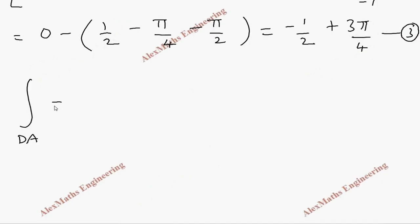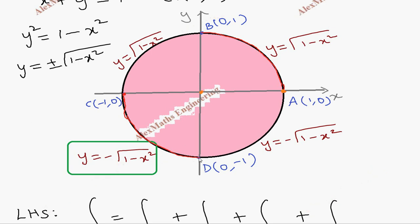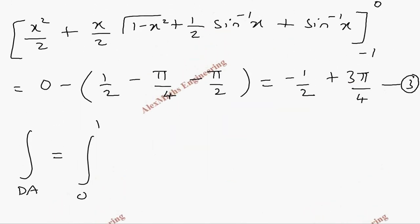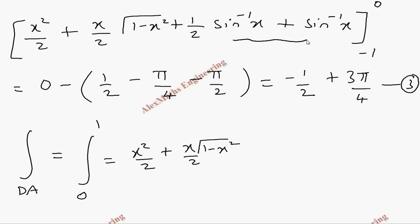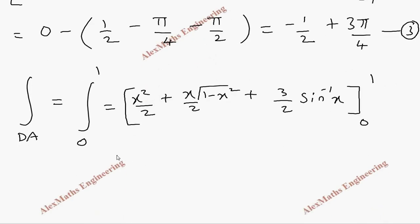For the last part, integral from D to A, the x limit goes from 0 to 1, and the equation still has the negative y. Copying the same integrated expression and combining the sin inverse terms as (3/2)·sin⁻¹(x), evaluated from 0 to 1: the upper limit gives 1/2 plus (3/2)·(π/2) equals 1/2 plus 3π/4. This is our fourth part.